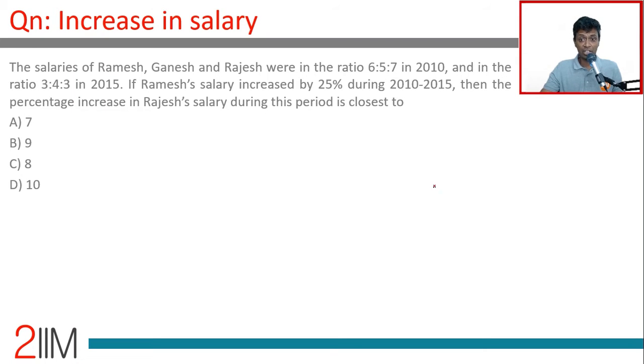The salaries of Ramesh, Ganesh and Rajesh were in the ratio 6:5:7. Ram, Gan, Raj, 6:5:7. This is in 2010 and in the ratio 3:4:3 in 2015.